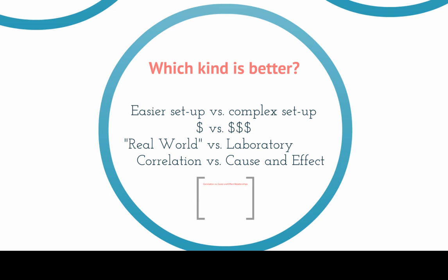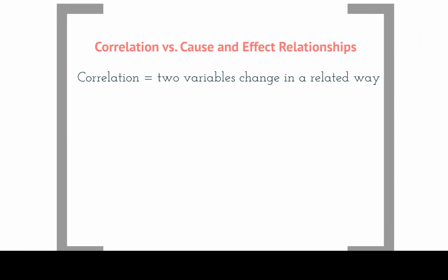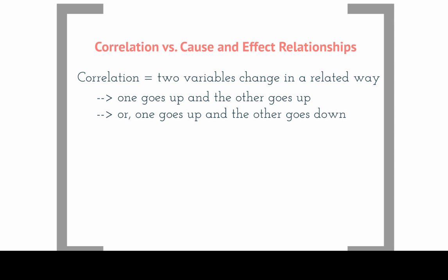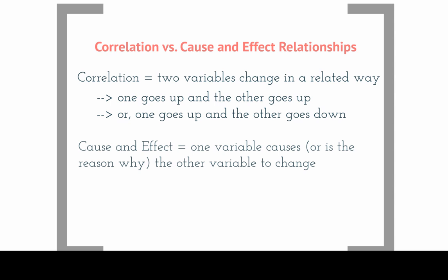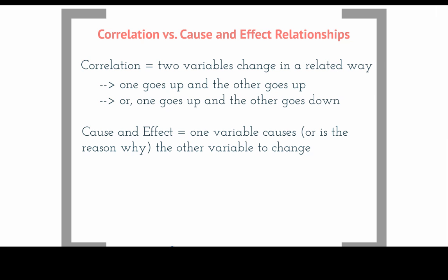The key distinction here is that descriptive studies give you correlations, and experimental studies can help establish cause and effect. A correlation is when two variables change in some related way — if one variable goes up, the other goes up, or if one goes up, the other goes down. But that doesn't always mean that one is causing the other to change. A cause and effect relationship comes from an experimental study, and this is when we know that one variable — the independent variable — is the reason why the other variable is changing.